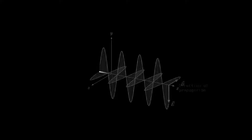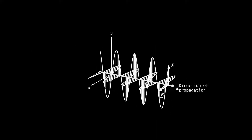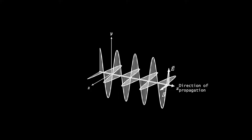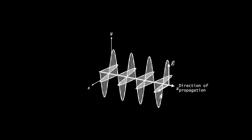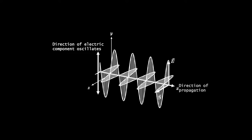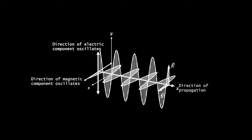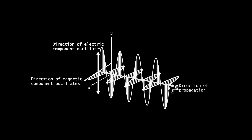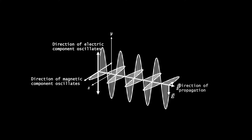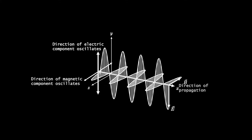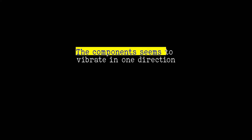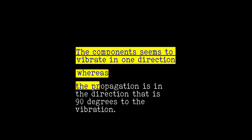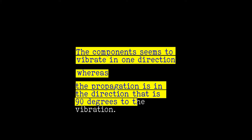Light is an electromagnetic wave. Light has an electrical component and a magnetic component. This is the electric component — this is the direction of oscillation. And the magnetic component oscillates in the perpendicular direction — this is also a direction of oscillation.